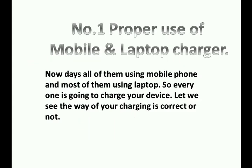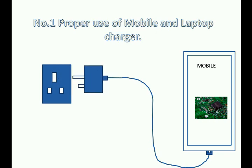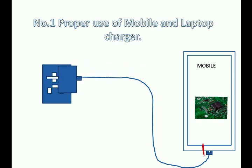Number 1: The proper use of mobile phone charger. Nowadays, everyone is using a mobile phone and most are using a laptop, so everyone is going to charge their device every day. Normally, we connect our mobile or laptop with the charger and then connect the charger to power. When we do this and switch on the charger, a starting impulse output current is created on the charger that will affect the device battery and charging system.